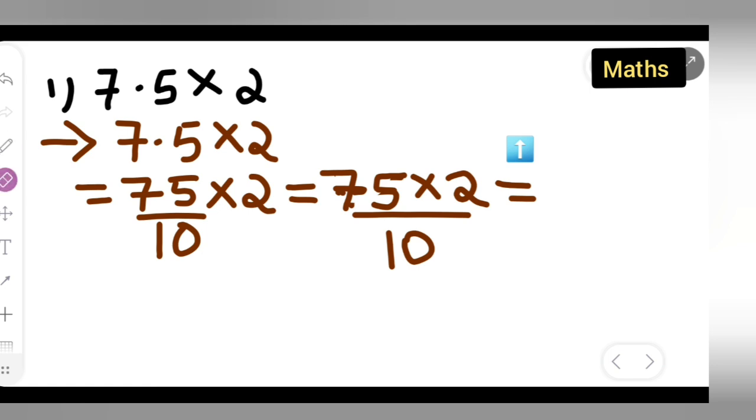Let me use some other pen. So 75 multiplied by 2. 2 times 5 is 10. 2 times 7 is 14 plus 1 will give you 15. So 150, right? So you all can cancel this and write down 150.